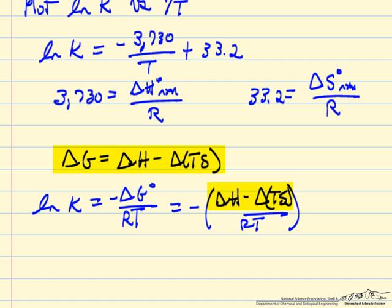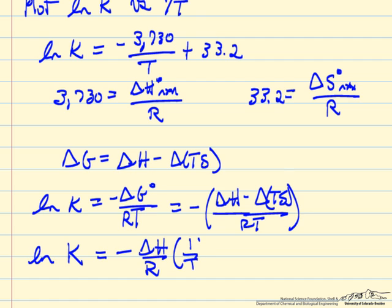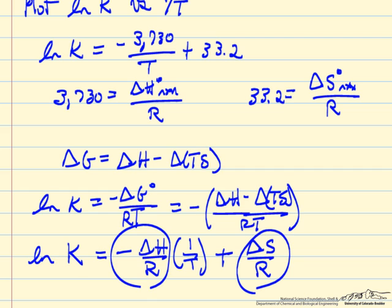Notice the log of the equilibrium constant is related to minus delta G standard conditions over RT. And delta G from our definition, so delta H minus delta TS over RT. If we're evaluating this at a temperature, so we have some equilibrium constant at 280 Kelvin for example, then minus delta H over R, 1 over T, and plus delta S over R, and this then is the intercept, this was the slope.